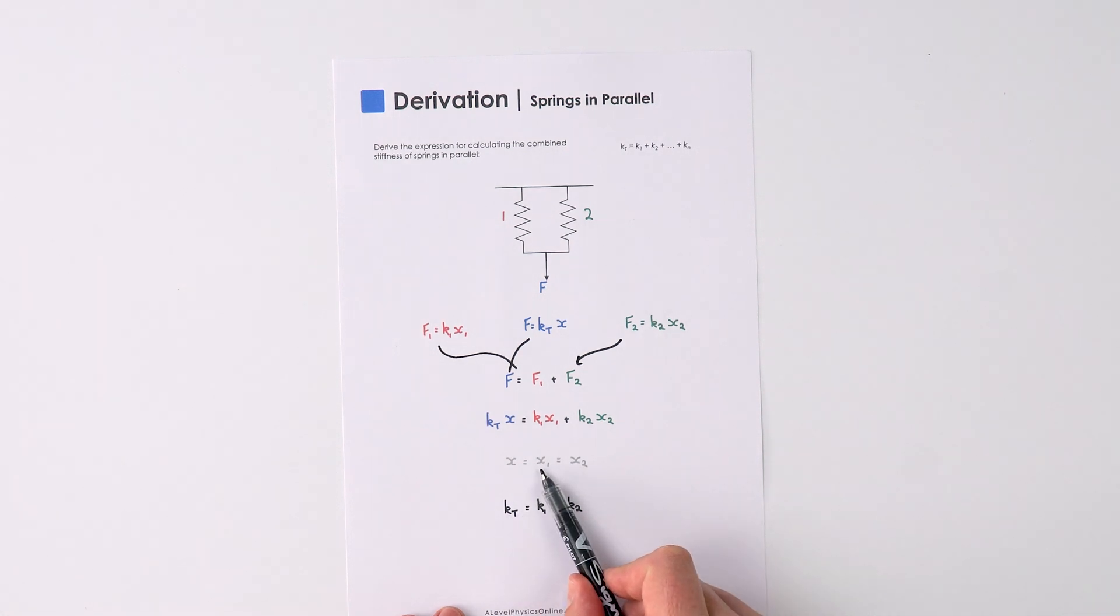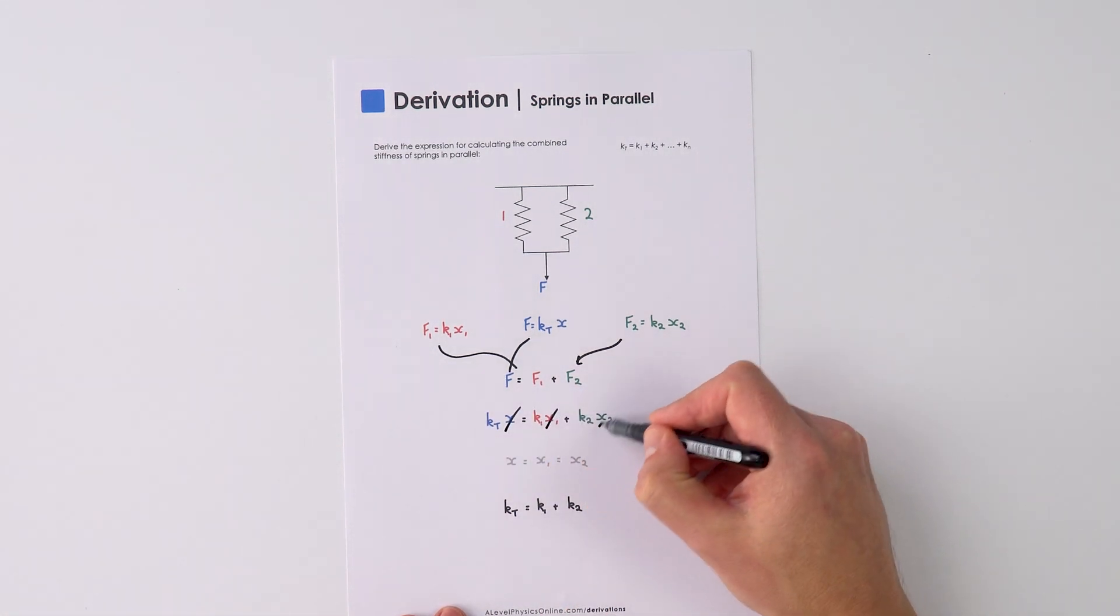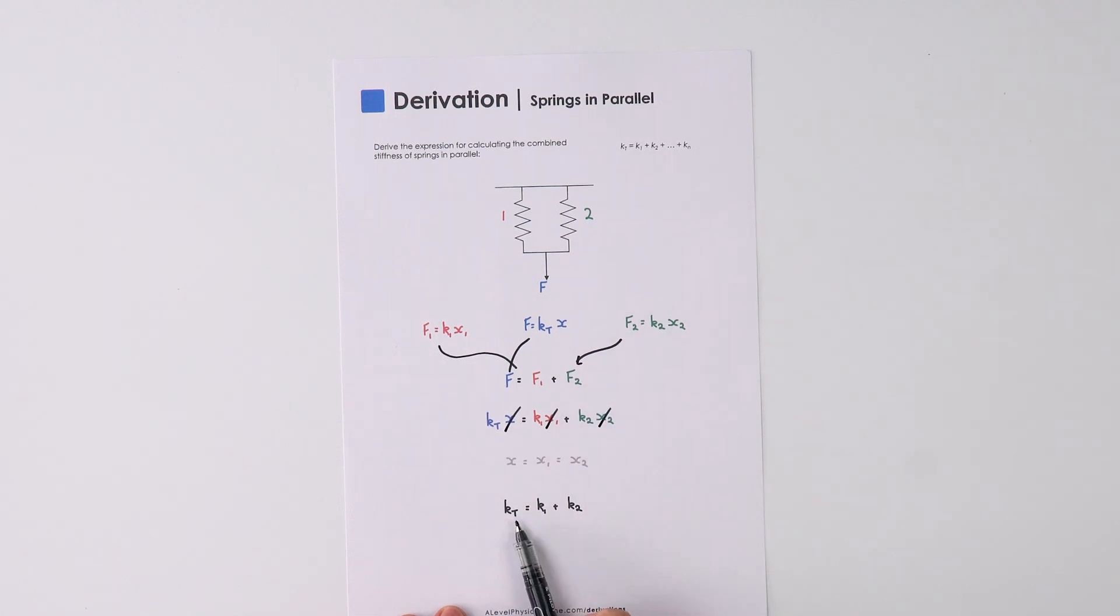And therefore we can say that X is equal to X1 which equals X2 and therefore these cancel. And therefore we can say that KT, the overall or combined spring constant, is equal to K1 plus K2.